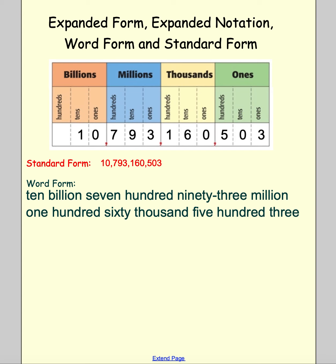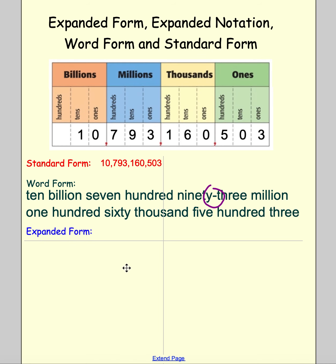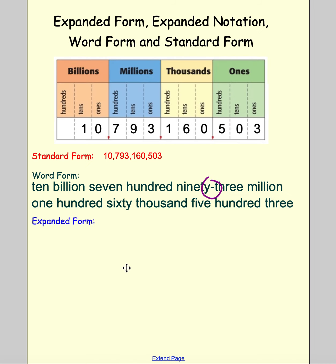The most important thing is the hyphen in '93.' Remember, numbers like 90s, 80s, 70s, 60s, 50s, 40s, 30s, and 20s all need hyphens when they're part of a compound number like that. After word form, let's take a look at expanded form.